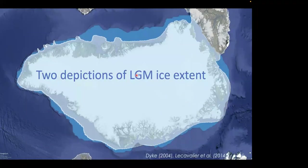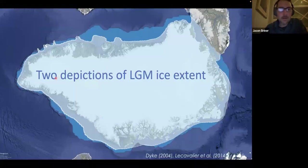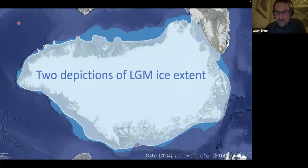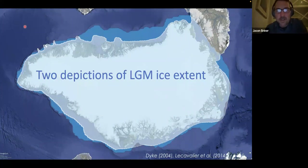Here's Greenland on its side — it's taking a nap, which is what I should be doing right now here in Norway. What you see here are two depictions of the LGM ice extent — how large the Greenland ice sheet got during the peak of the Last Glacial Maximum. In my view, and in some other people's views, it was probably even larger than that dark blue outline, but here are a couple of published reconstructions.